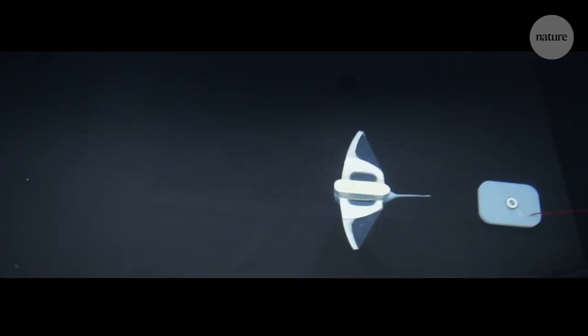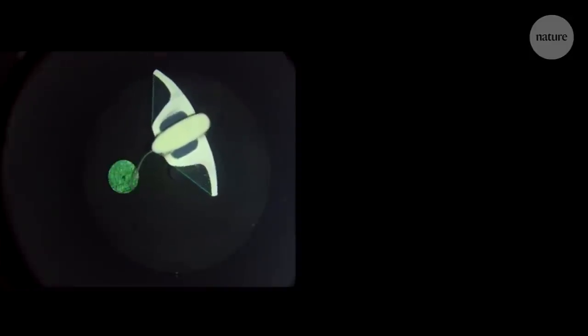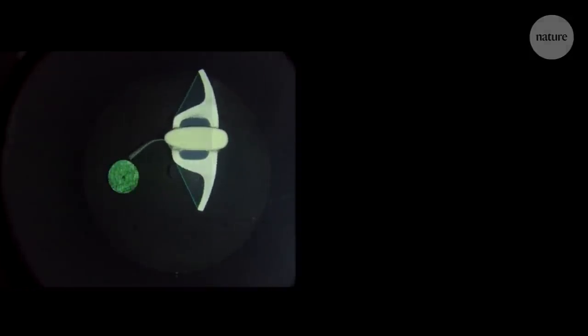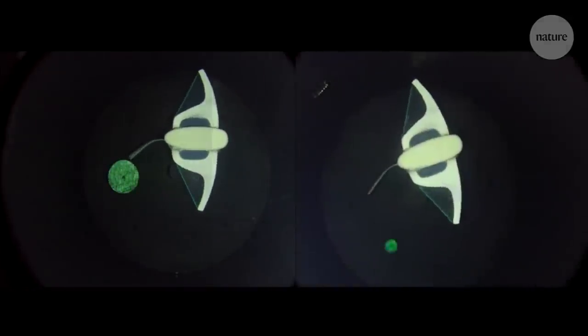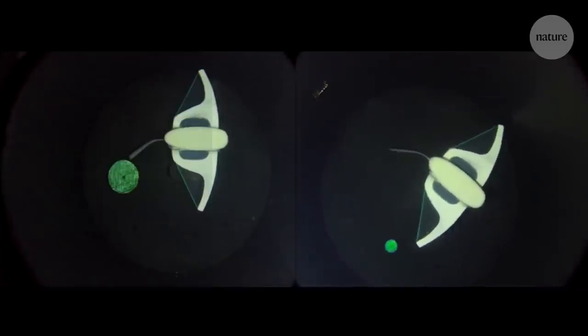The robot performed well in a pressurized chamber in the lab, first swimming in a circle, then free swimming. To get a sense of how much pressure the chamber is under, look at the green foam cylinder. At atmospheric pressures, it is 6cm across. But at pressures mimicking the deep ocean, it's crushed to less than 1.5cm.